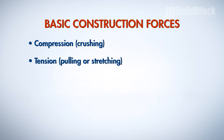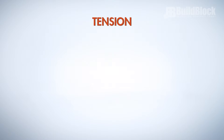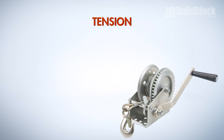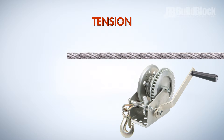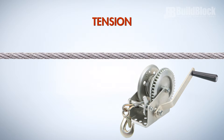Secondly, we have tension. Think of tension as expansion, pulling, or stretching. For example, picture a steel cable attached to a winch. As the winch is tightened, the steel cable stretches tighter and tighter. Once the maximum design stress is reached, the cable will be fully loaded, and if more tension is added, the cable will snap.